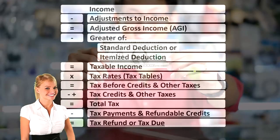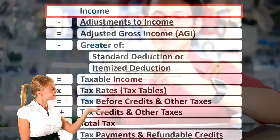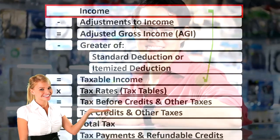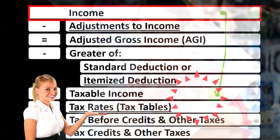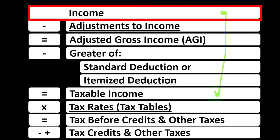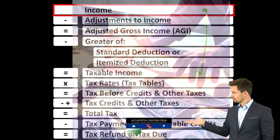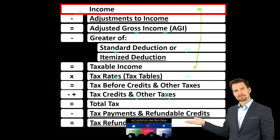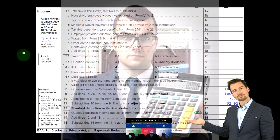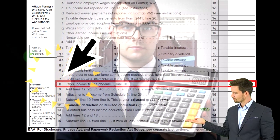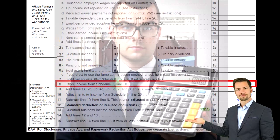Looking at the income tax formula, we're focused on line one income. The first half of the income tax formula is essentially an income statement, just an outline, with other forms and schedules flowing into these line items. One of those is the Schedule C, which has business income minus business expenses — the net business income flows into line one of the income tax formula. On page one of Form 1040, the Schedule C flows into Schedule 1, which flows into the first page of Form 1040.